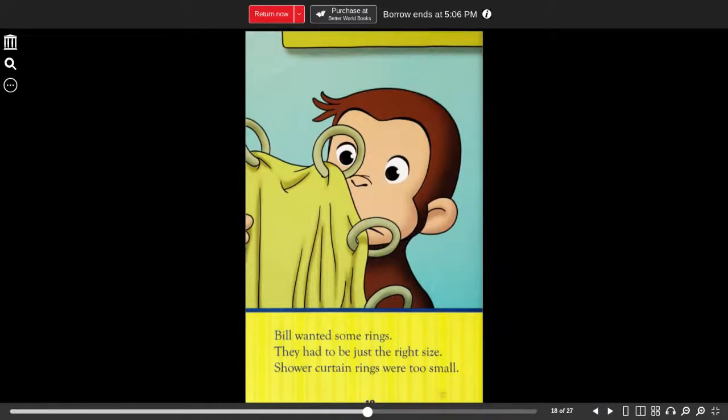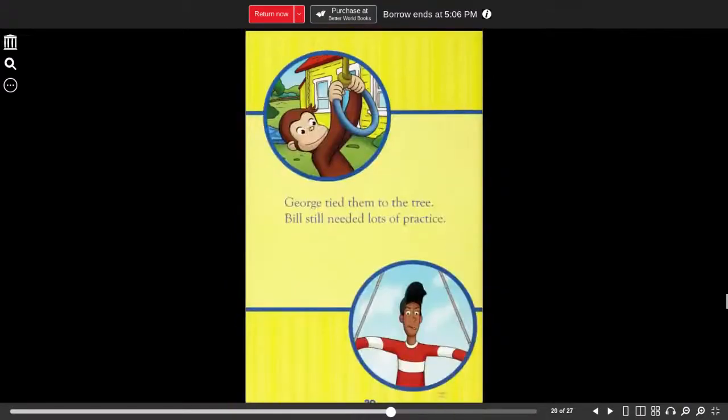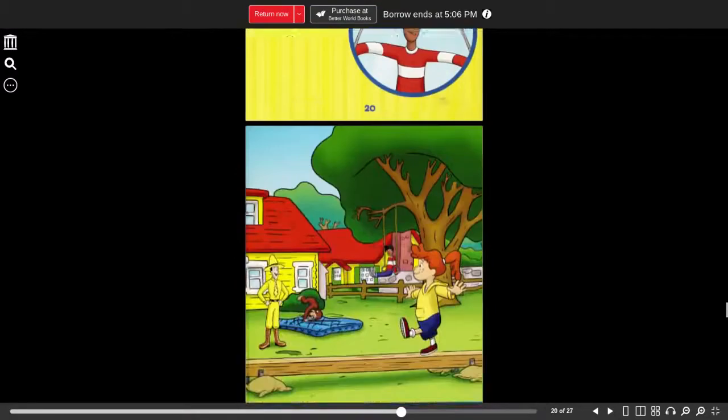Bill wanted some rings. They had to be just the right size. Shower curtain rings were too small. But the towel ring was perfect. George tied them to the tree. Bill still needed lots of practice.